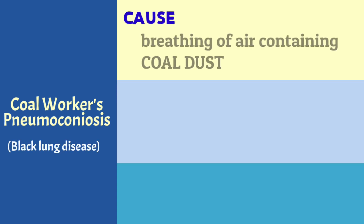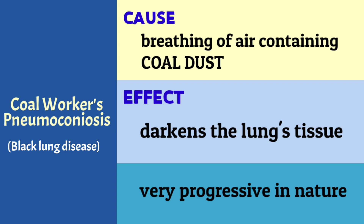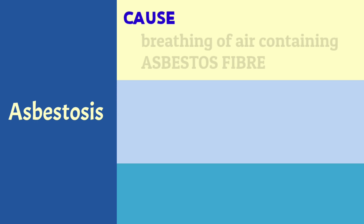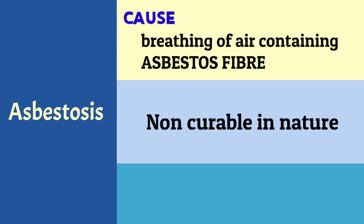Coal workers' pneumoconiosis is also called black lung disease. It is caused due to breathing of excessive respirable dust containing coal dust particles. These coal dust particles accumulate in the lungs and darken the tissue in the lungs. This disease is very progressive in nature.